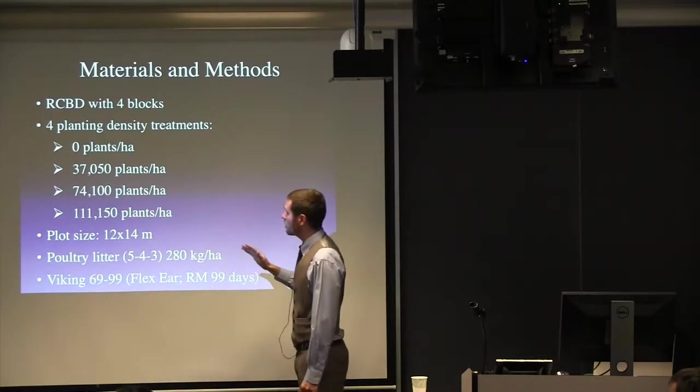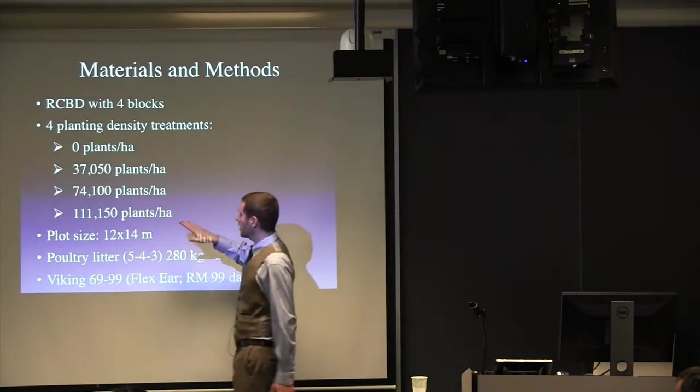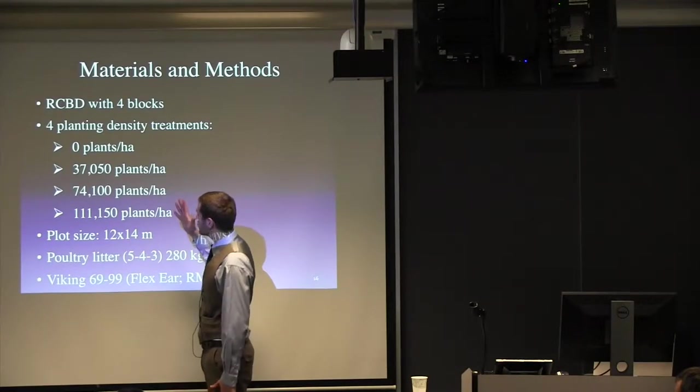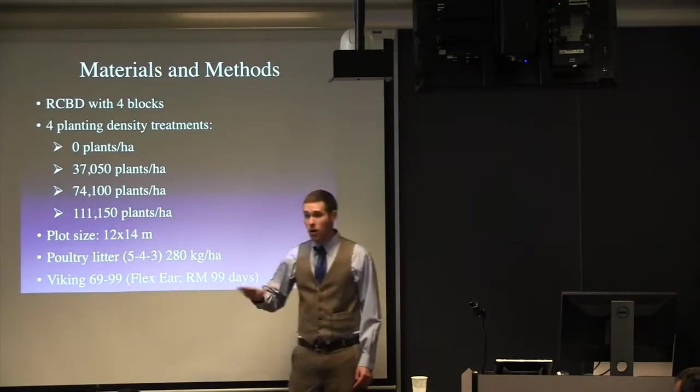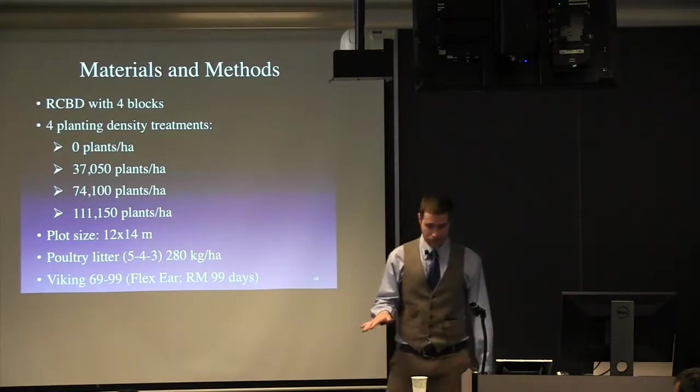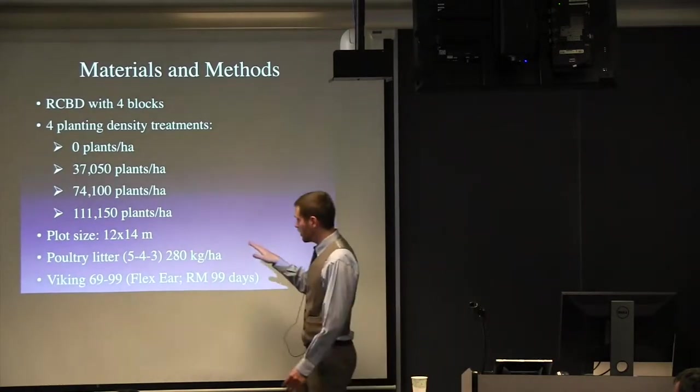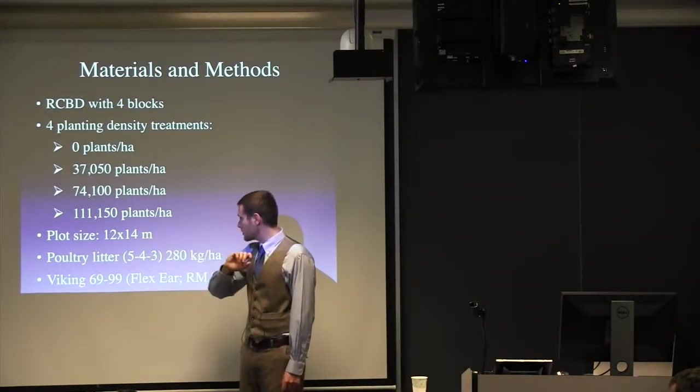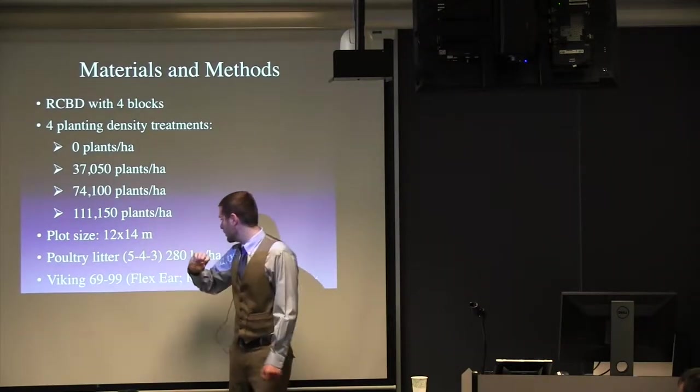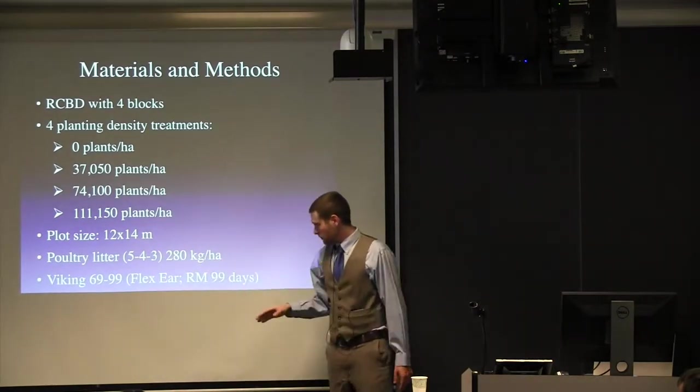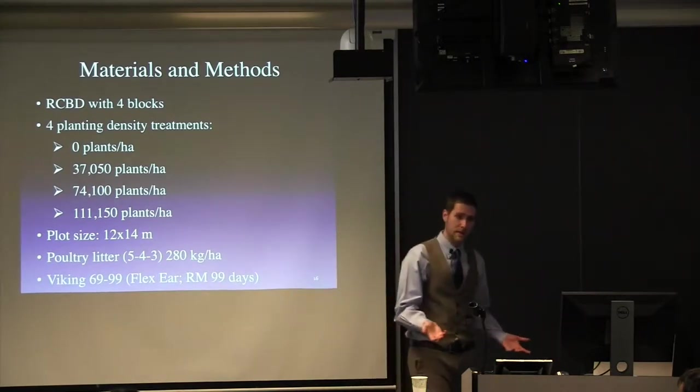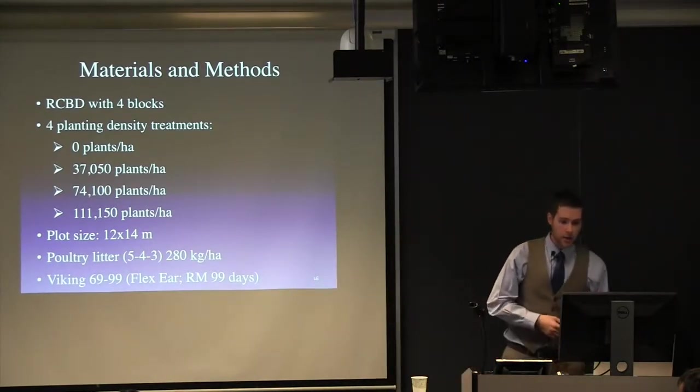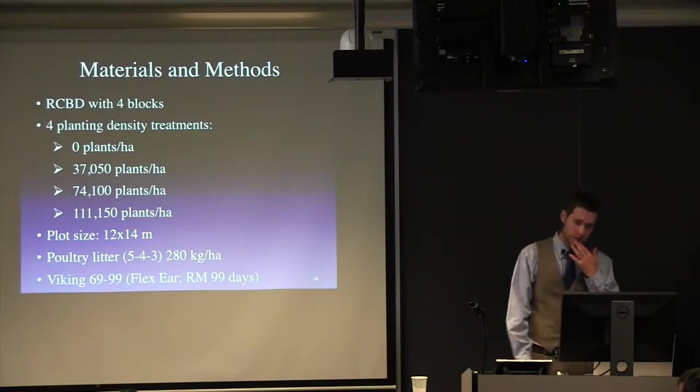These were all interseeded with cover crops, and I just want to say we had a fifth treatment, which was this medium planting density that had no cover crop interseeded into it. So, the plot sizes were 12 by 14 meters. We applied nitrogen as poultry litter, 280 kilograms per hectare, assuming about 50% availability for the corn, and we used flexier corn seed.